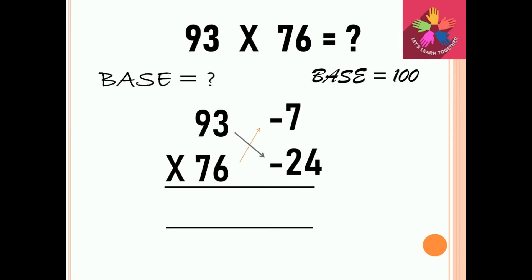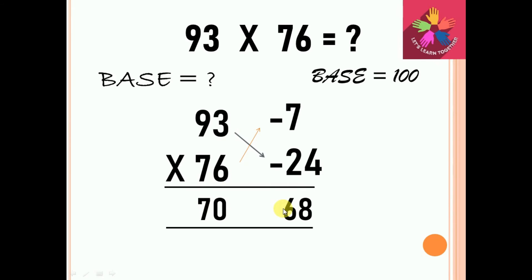Now we find the differences: 93 minus 100 equals minus 7, and 76 minus 100 equals minus 24. The next step is to find the sum: 93 plus minus 24 gives 69, and 76 plus minus 7 also gives 69 — both answers are the same, confirming our left-hand side is 69. Then the product: minus 24 into minus 7 is 168. So 93 into 76 equals 6,948. You can check this with a calculator and the answer will be correct.